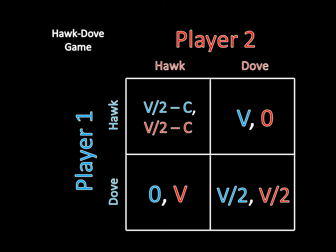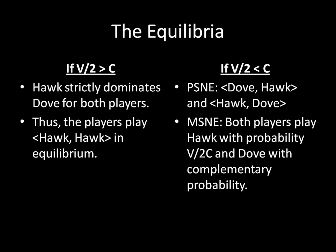We found out that the equilibrium of this game depended upon those exogenous parameters. We found that if V over 2 was greater than C, then Hawk strictly dominated Dove for both players, so Hawk-Hawk was the unique equilibrium in that case. But if V over 2 was less than C, this game changed to a game of chicken essentially, and there were two pure strategy Nash equilibria: Hawk-Dove and Dove-Hawk. And then there was also a mixed strategy Nash equilibrium, where both players played Hawk with probability V over 2C, and Dove with complementary probability.